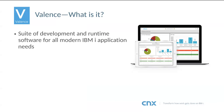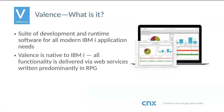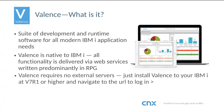Valence is native to the IBM i. A lot of people ask what system — Linux or Windows — we ported it from, but this was designed from the ground up for IBM i. The functionality is primarily delivered by web services written in RPG. There are no external servers required — no hidden Windows server. You just install Valence to your IBM i — you need to be on 7.1 or higher — and then navigate to the URL to log in.